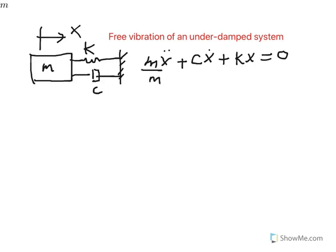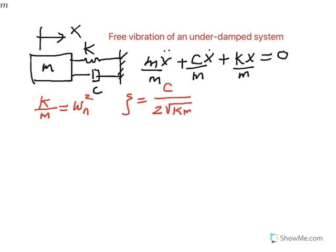Typically what we do is divide by mass — that's called normalizing the differential equation. Then we define some new terms: k over m is the natural frequency ωn squared, so ωn equals the square root of k over m. We also define a damping ratio denoted by ζ as c divided by the square root of 2km, which can also be written as 2mωn. After dividing by mass, the term c over m becomes 2ζωn.